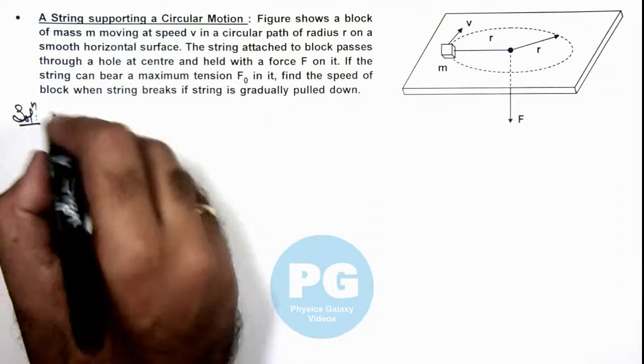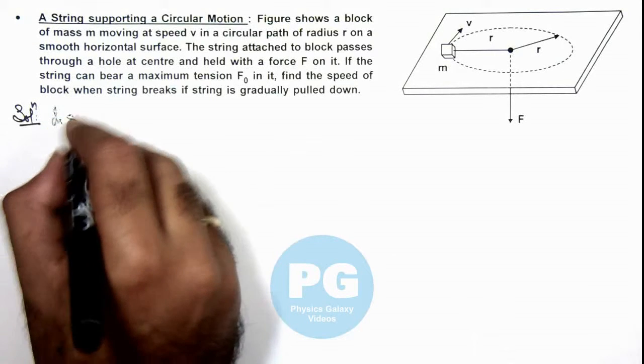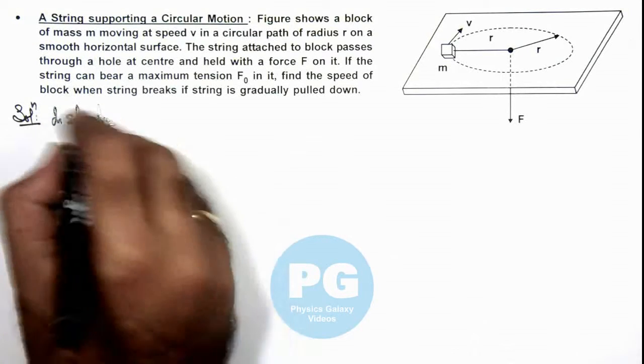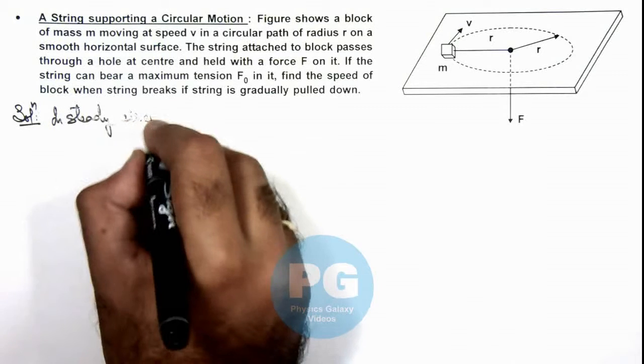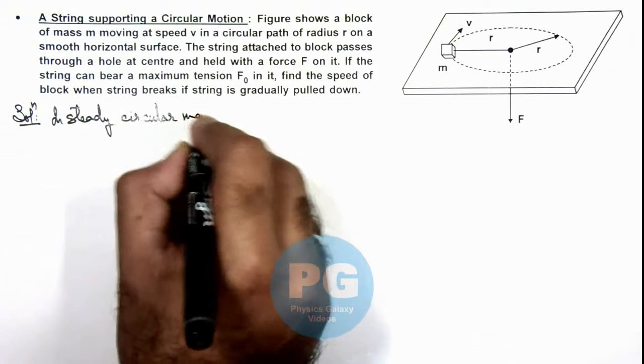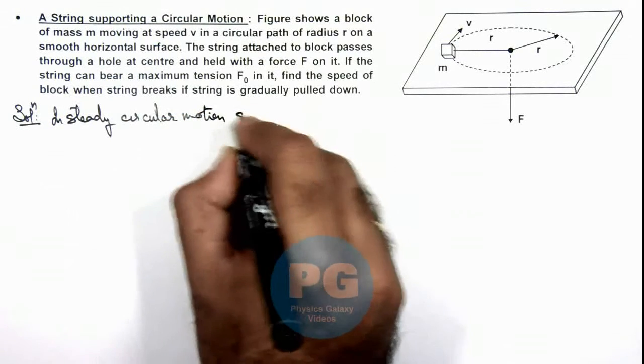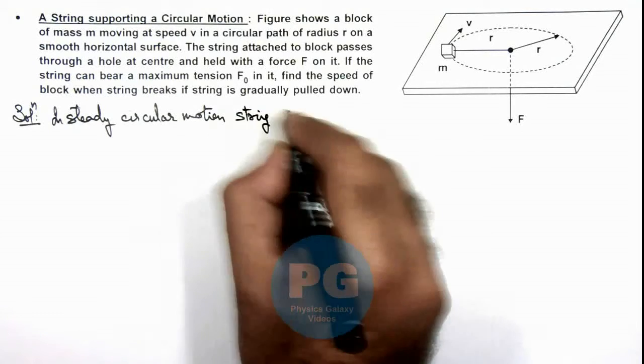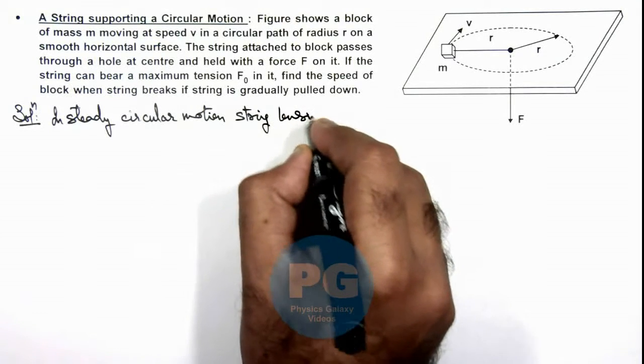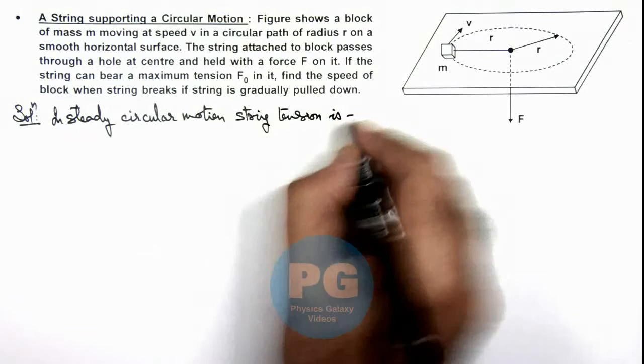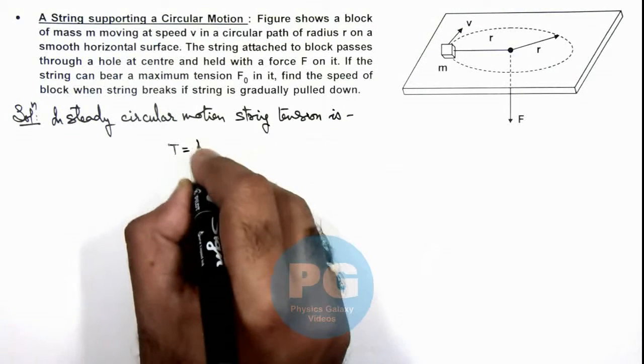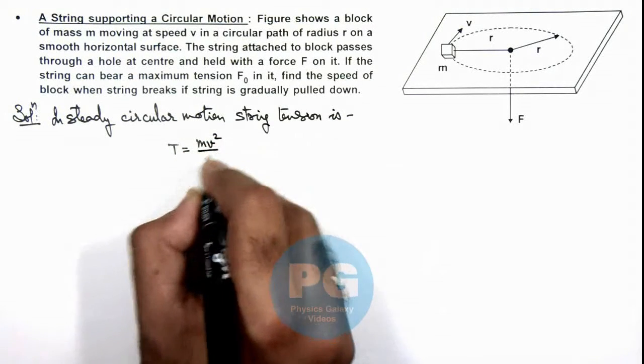So here we can write, in steady circular motion, here we can write string tension is, this tension we can directly write as m v squared by r.